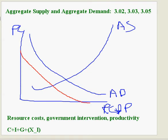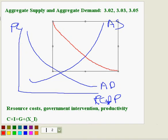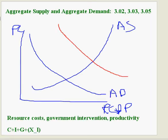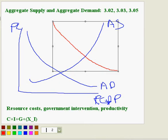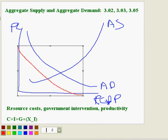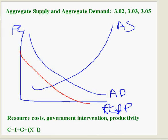If government spending increases, we would see an increase in aggregate demand. If exports increase, we'll see an increase in aggregate demand. If imports increase, we'll see a decrease in aggregate demand.